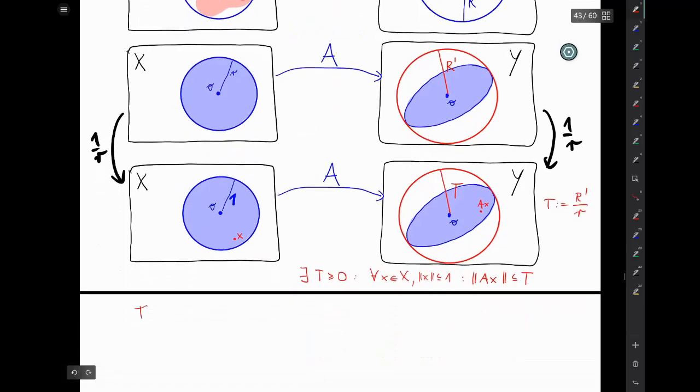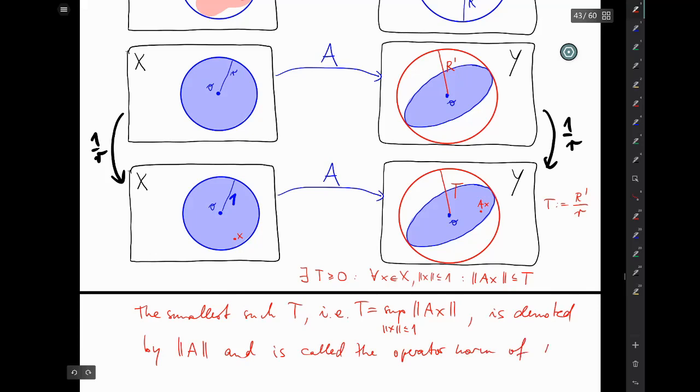Okay, and moreover, the smallest such T, which is the supremum of all norms that Ax can have when x is running through the unit disk in X, is denoted by norm bars A norm bars and is called the operator norm of A. Well, often we just drop the operator here and just say the norm of A. Okay, well that should probably be a definition.